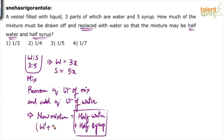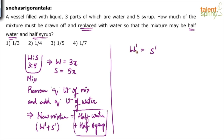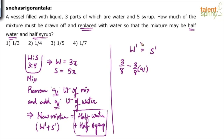Half water and half syrup means w-dash equals s-dash — the final quantity of water equals the final quantity of syrup. Now, initially how much was water? The fraction of water initially was 3 out of 8. We removed q liters of mixture, so 3/8 of q water came out. We subtracted 3/8 of q water.